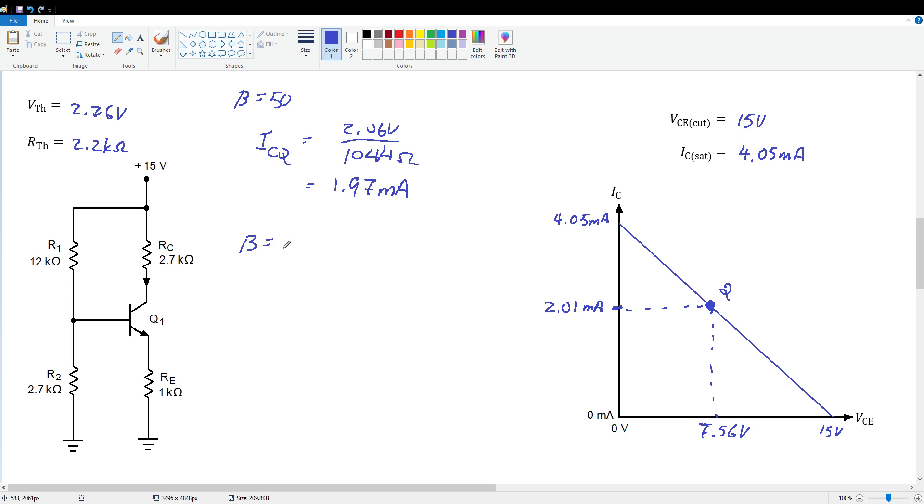If beta equals 300, we end up with ICQ equals 2.06 volts divided by 1,007, which gives us 2.04 milliamps. So we estimated beta of 100 and it gave us 2.01 milliamps. If the beta was low, it would be 1.97. If the beta was high, it would be 2.04. There's virtually no difference in the ICQ value over this extreme range of beta from 50 to 300. And that's a good thing.